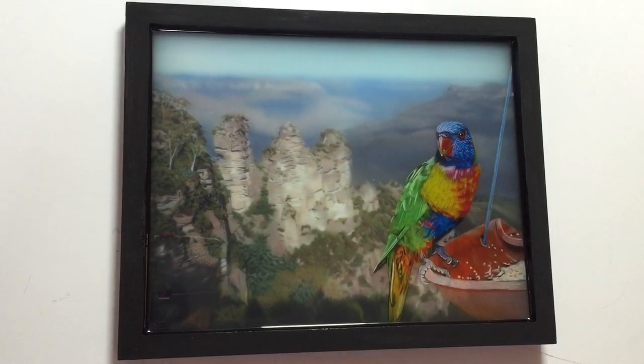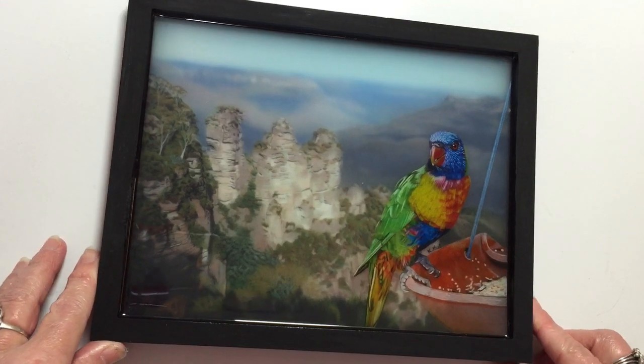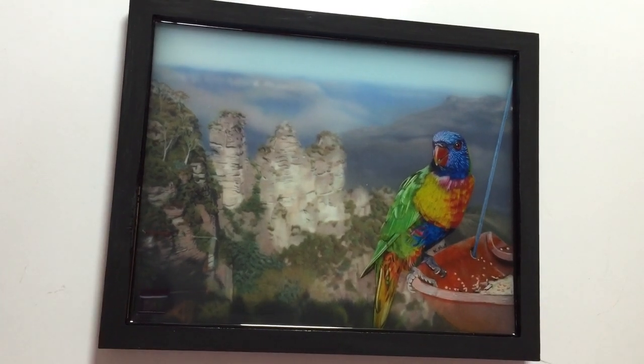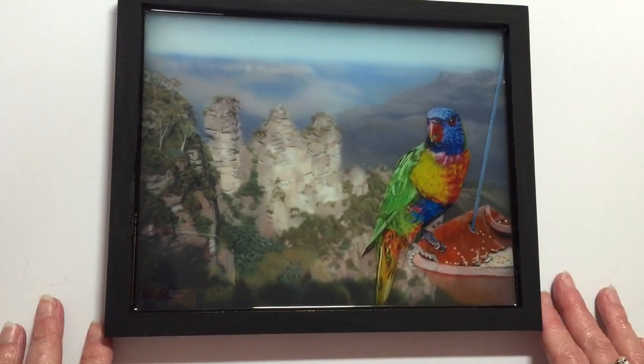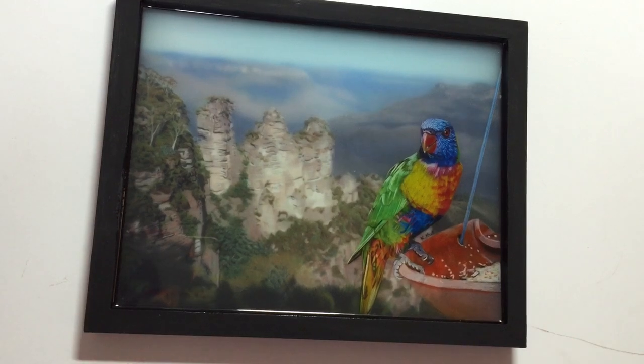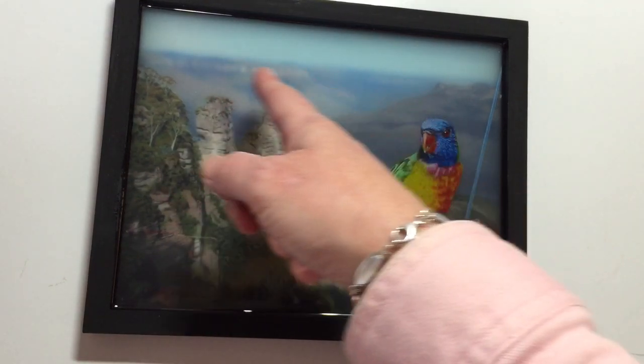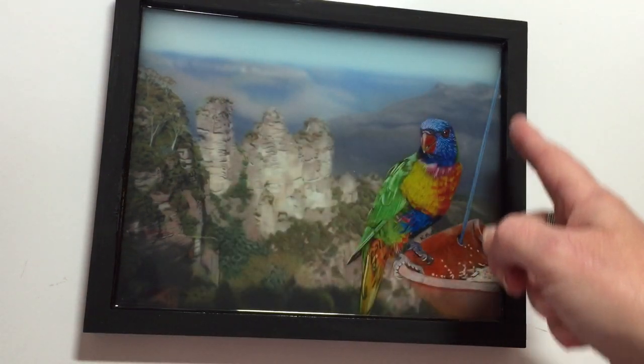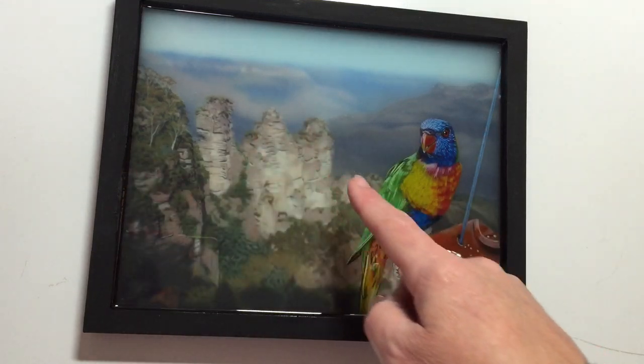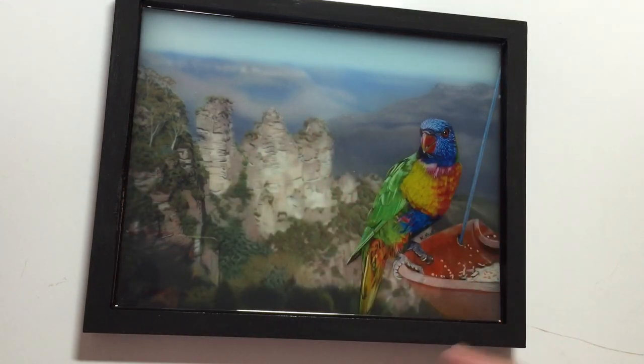And just to give you an idea of what a completed piece might look like. This piece was started in the same way as what we've just done. And it's had four layers in total. The background. Then the mountains here. The detailed cliffs and mountains in the front. And then the bird.